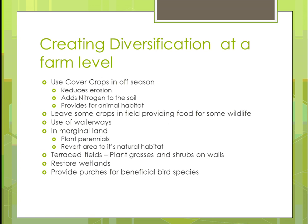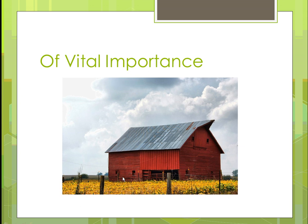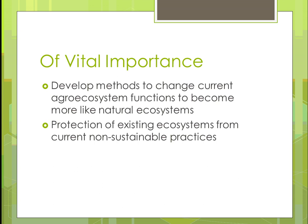Another good practice is to create perches for beneficial bird species — you can build different types of perch resting places to attract them. Now we're going to look at what's of vital importance in becoming a sustainable agro-system. We need to develop methods to change our current agro-ecosystem function to become more like a natural ecosystem. Monocropping and using all external inputs means we are the farthest we've ever been from a natural ecosystem, and it's not able to sustain itself — we need to move toward that natural ecosystem as much as we can.